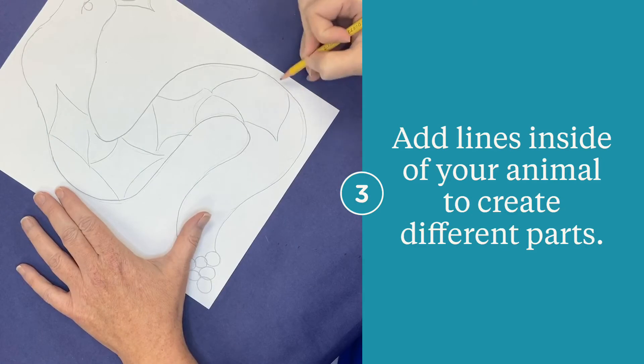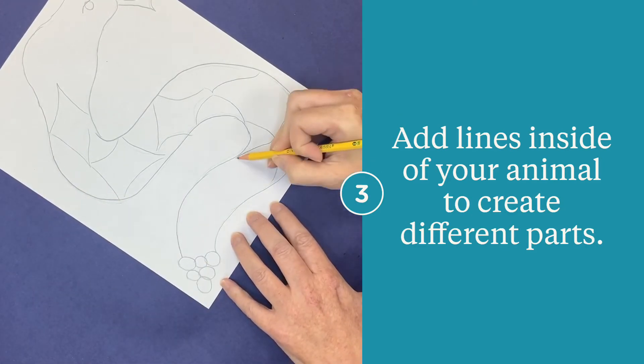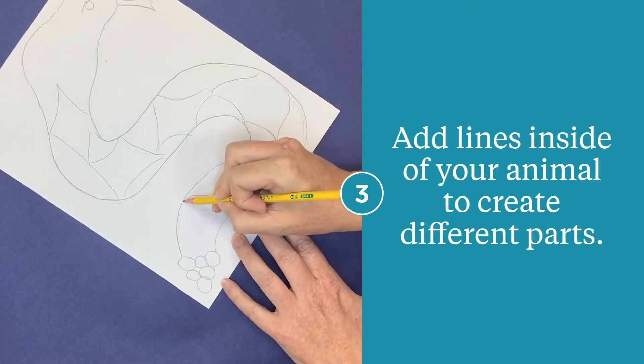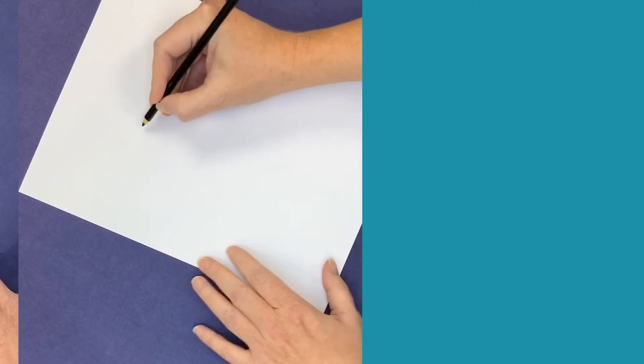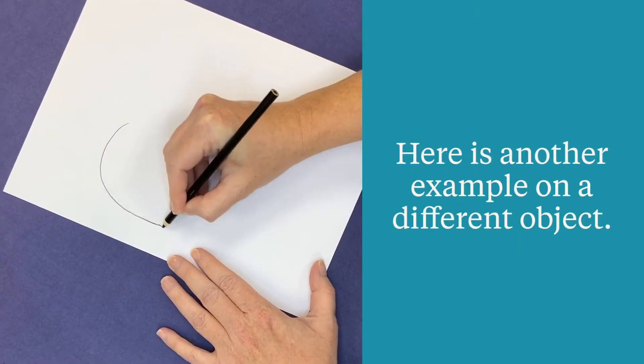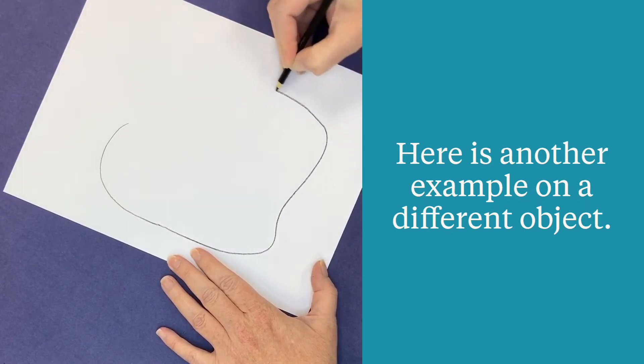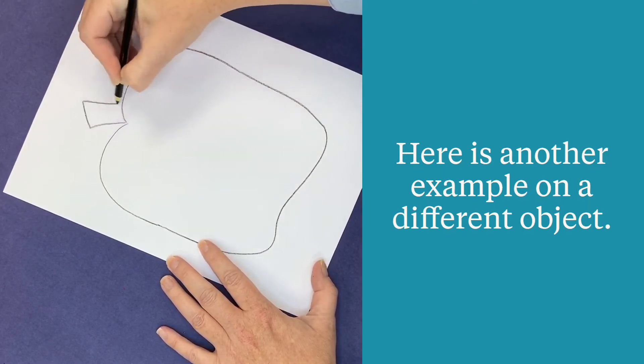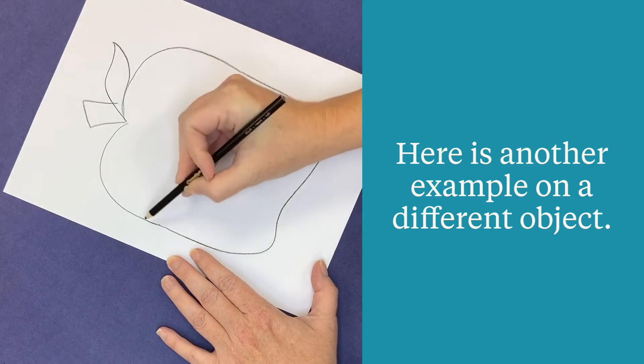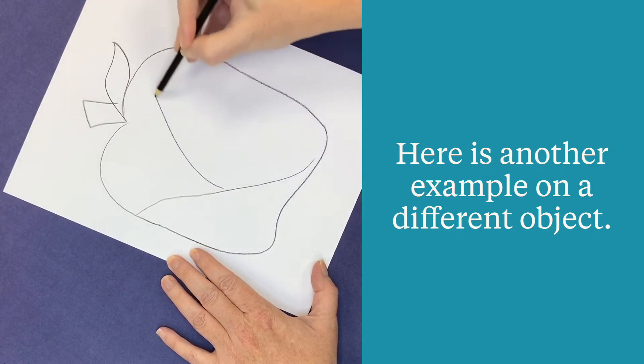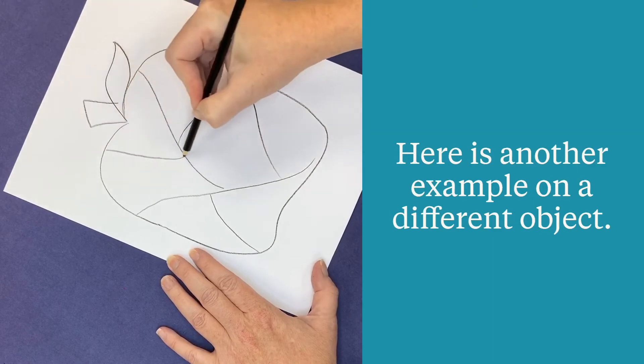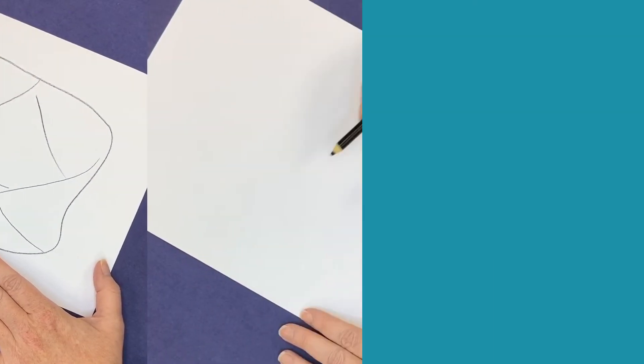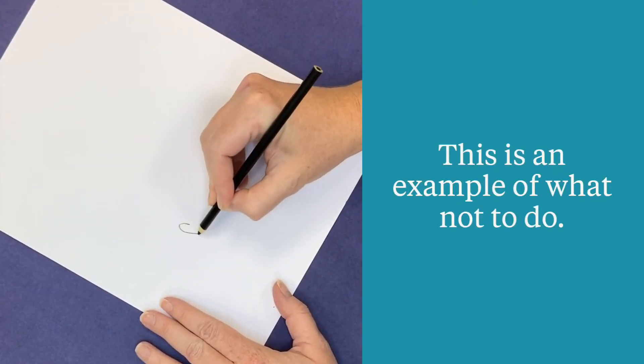Here's another example. This one isn't an animal, it's just an object, and this is the way you would add the lines inside a large open area. This picture is way too small; you can hardly tell what it is and there's no room to add the tangles.